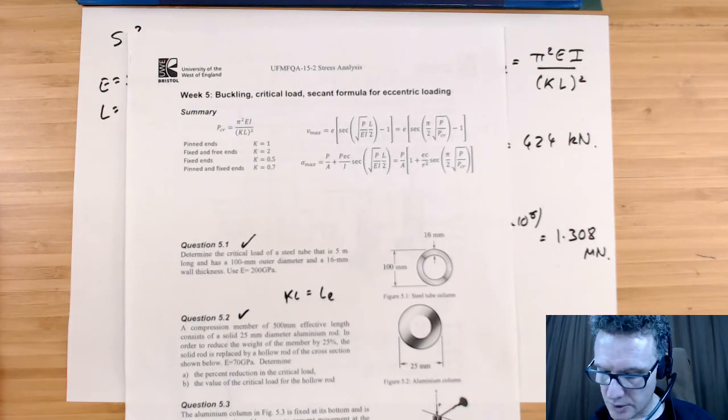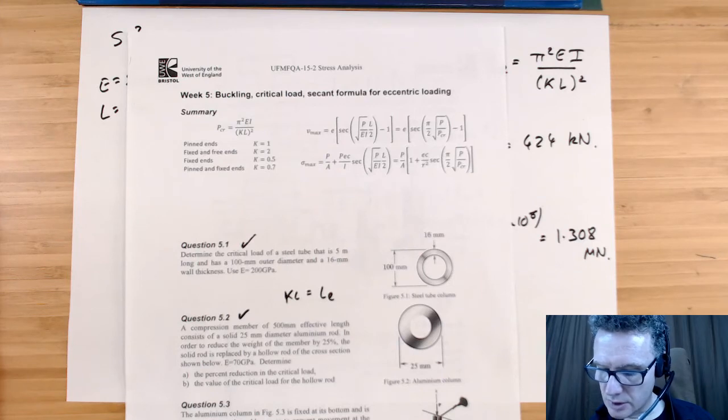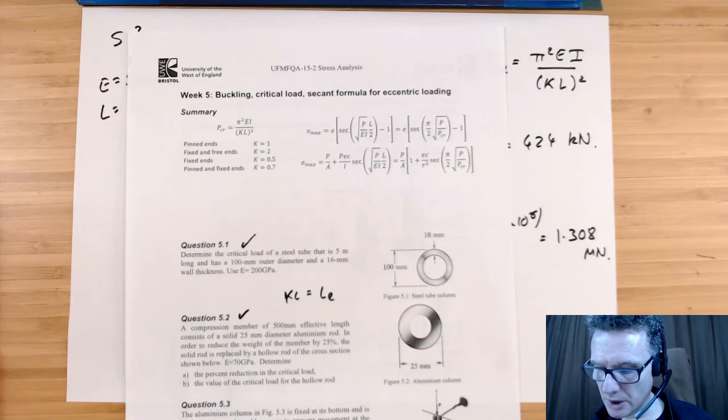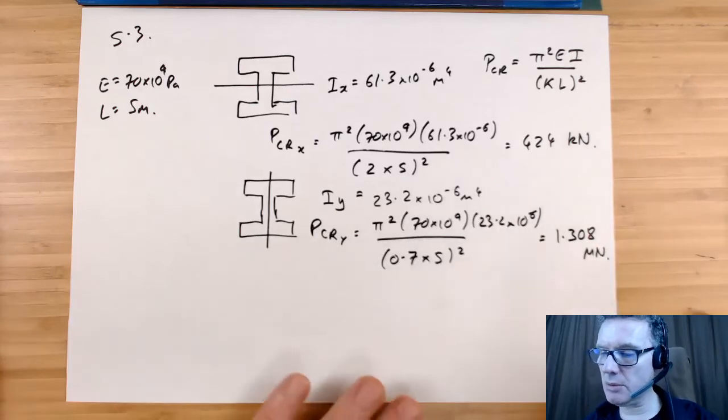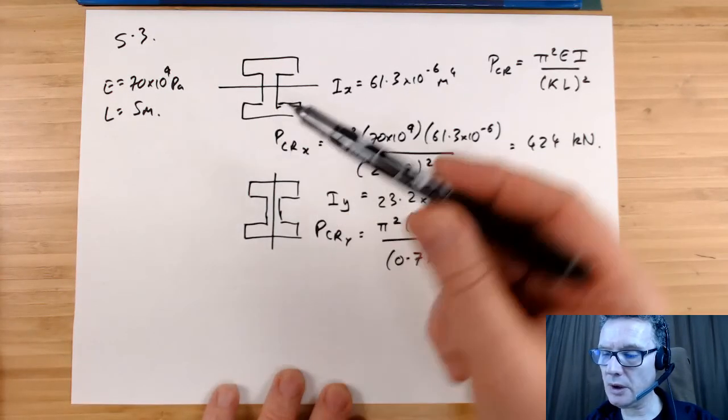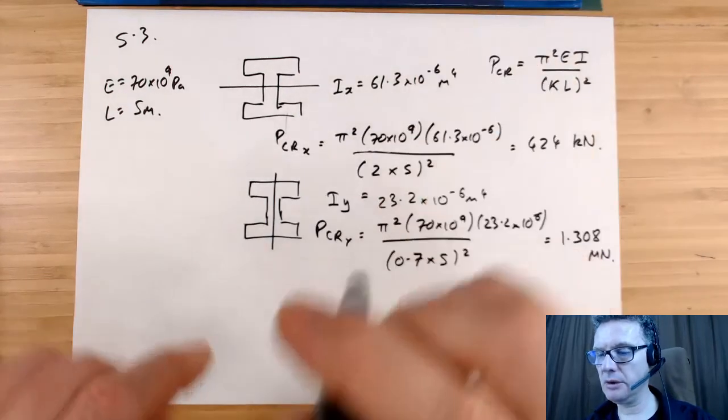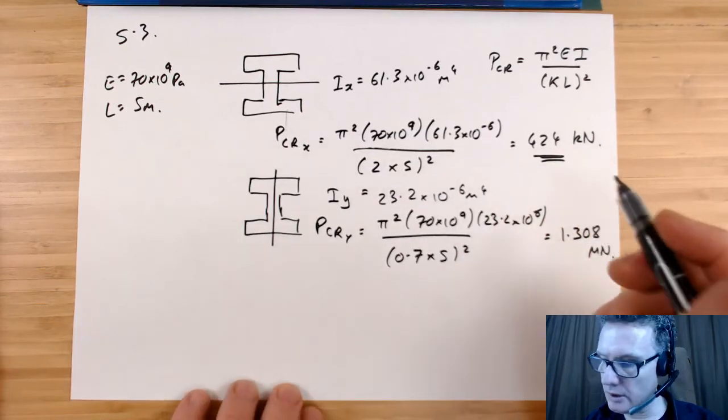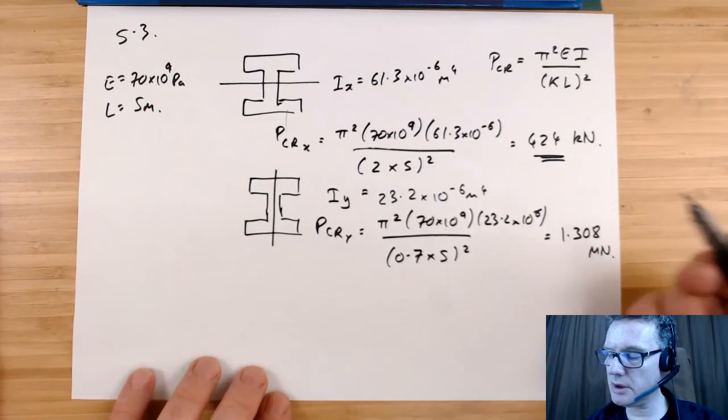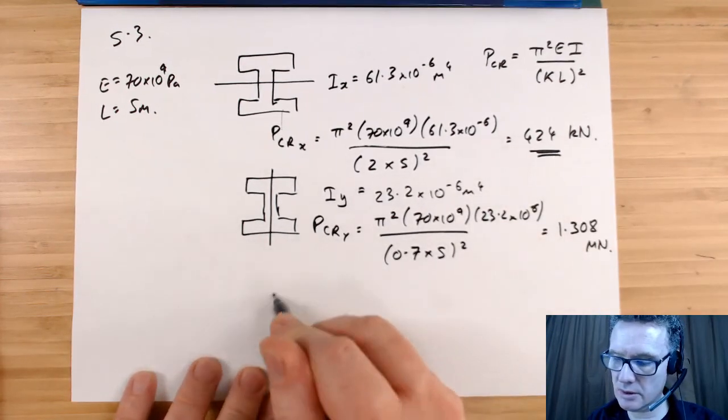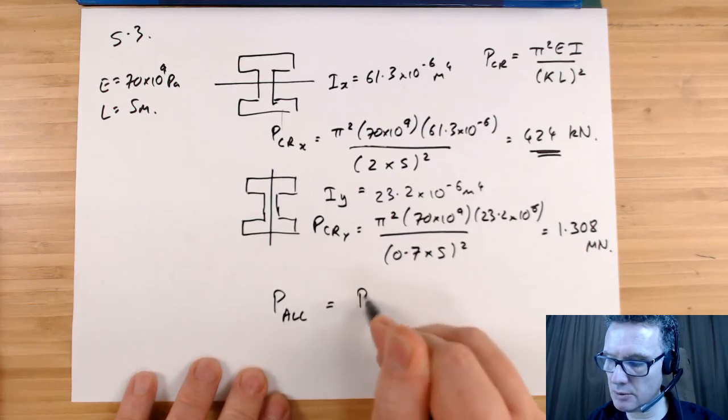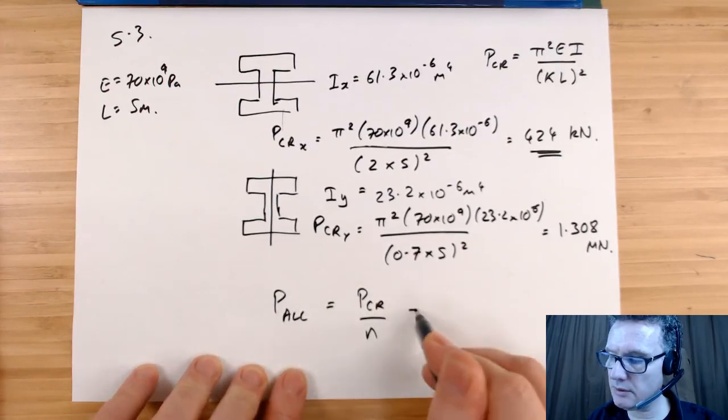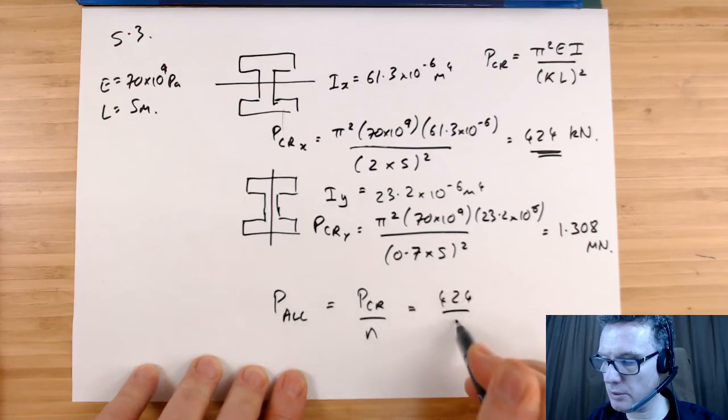Right, so what we're doing next then is, it is assumed determine the largest allowable P, use the factor of safety buckling 3. So the case where it's most likely to buckle is going to be going off in this direction here, all right. So that's that number and we want to then use a factor of safety. So therefore we need to reduce this. P_allowed equals P_critical divided by factor of safety, 424 divided by 3.